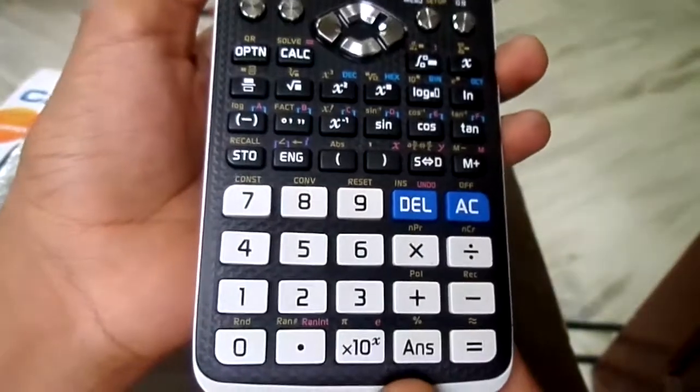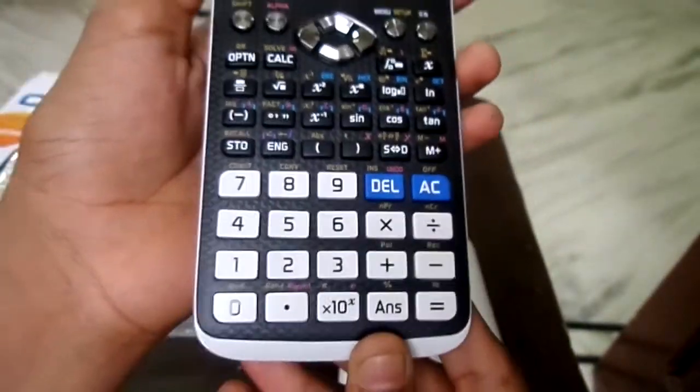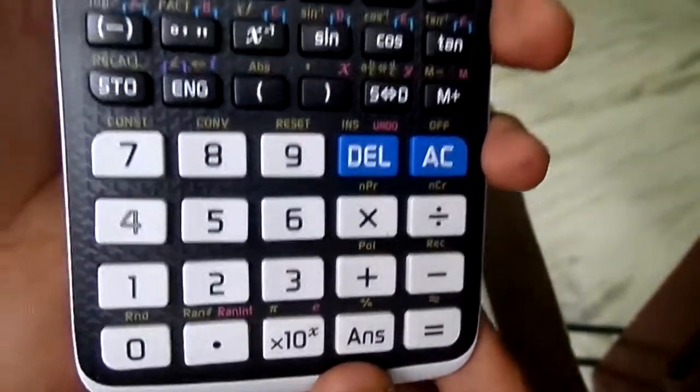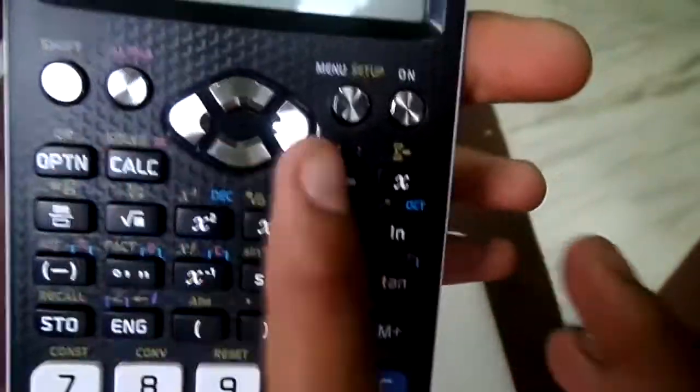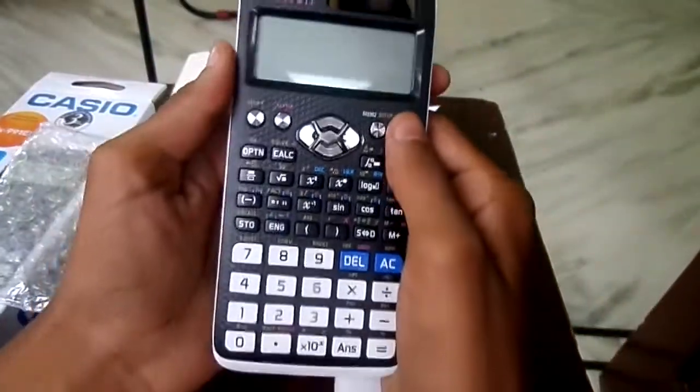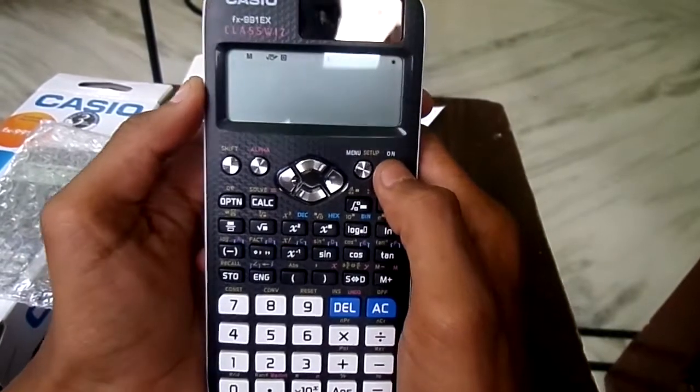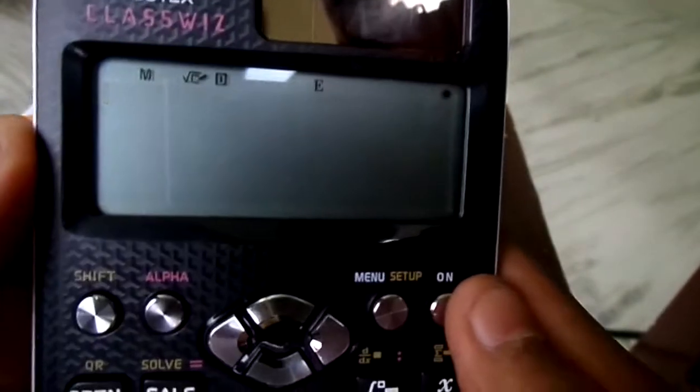At the bottom we have the common keys for every calculator. They are printed in white and the remaining function keys are printed in black. The silver keys are for those like shift, alpha, and menu.